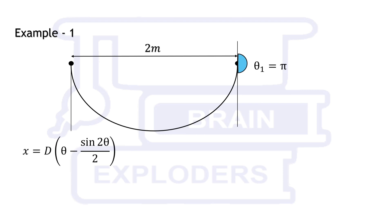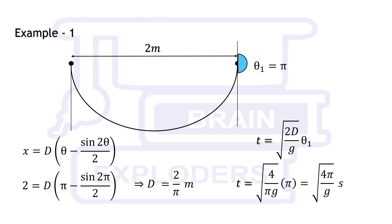Let us do some examples. In first example consider that both the points are at a distance of 2 meters on the same horizontal line. In this case theta 1 is equal to pi. We know that x is equal to d times theta minus sin 2 theta over 2. Substitute theta from pi. We find that d is equal to 2 over pi meters. Put the value of d and theta 1 in the equation of time. Required time is root 4 pi by g seconds.